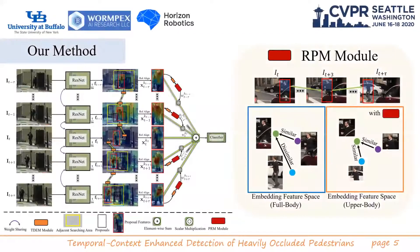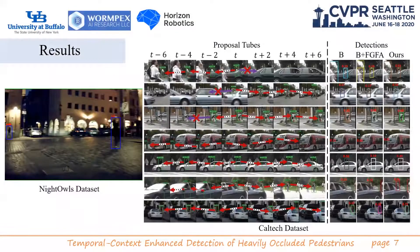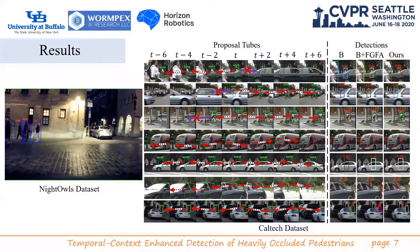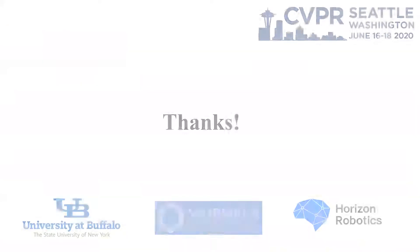After linking these potential screen proposals to a tube, we aggregate their features using an adaptive weight scheme by matching between the visible parts using the proposed PRI module. By comparing with the baselines and the state of the art, we show the strong effectiveness of our method for heavily occluded plans during the action. Thank you.